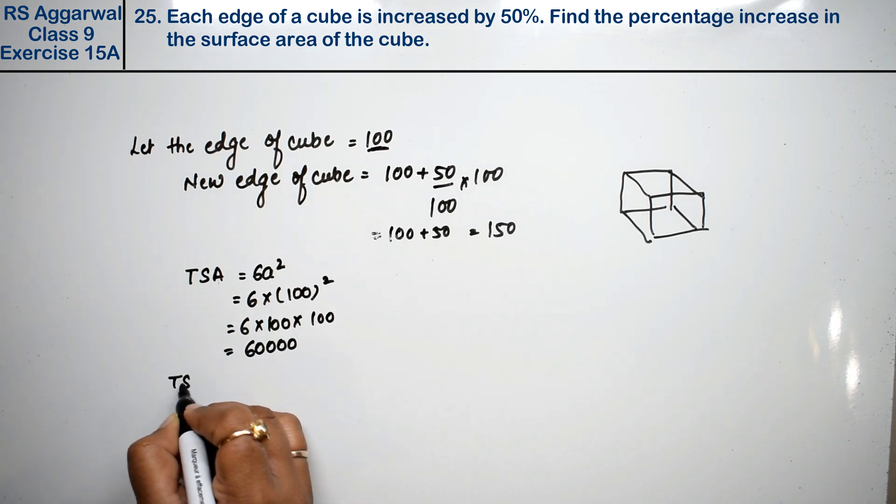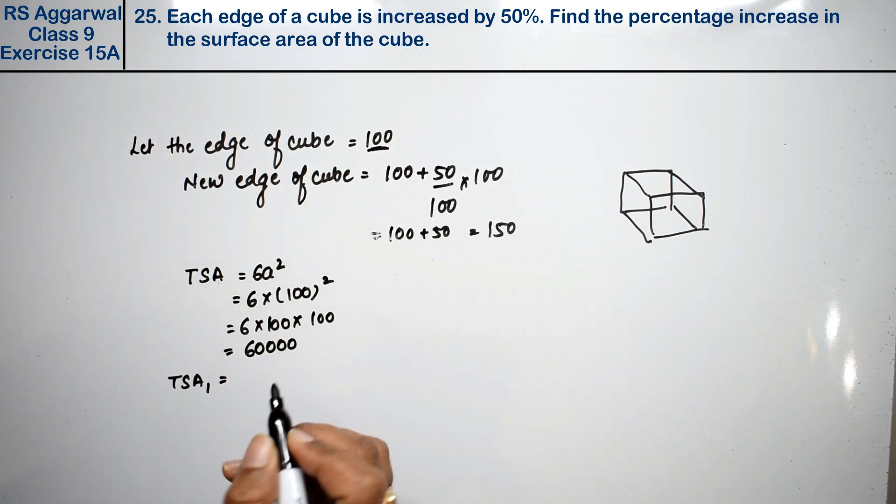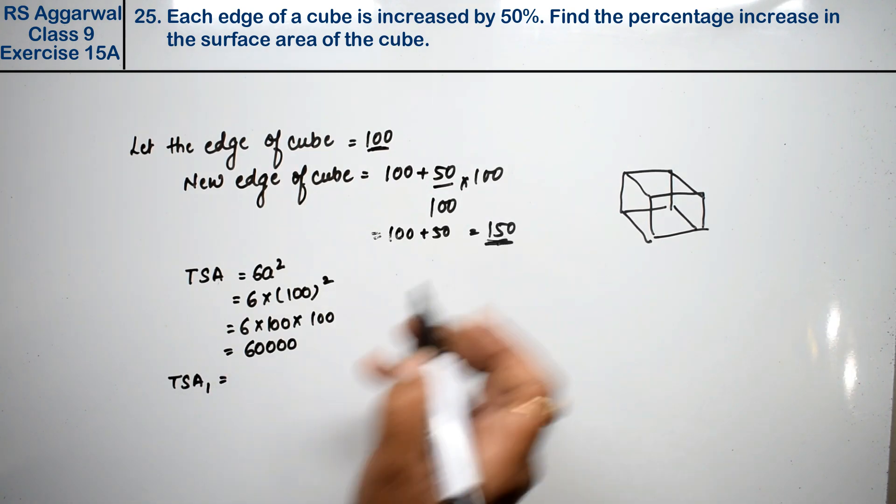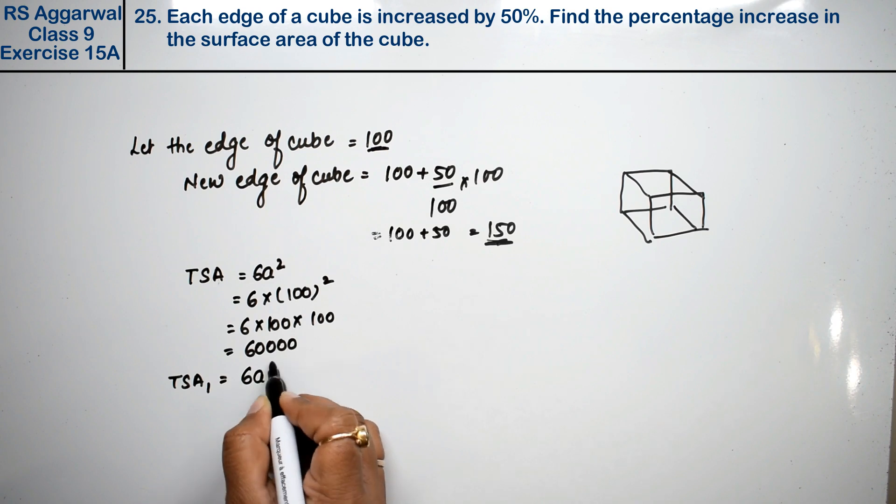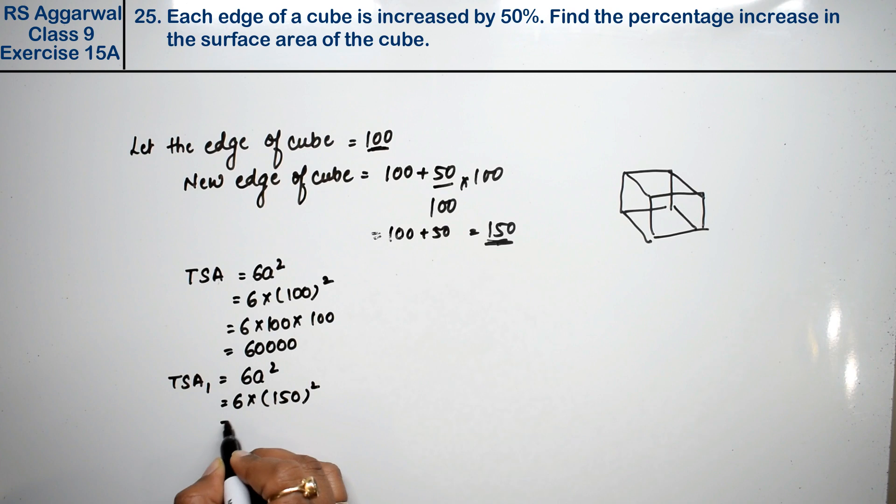Now we will take the total surface area of the new cube. What is the new edge of the cube? That is 6a², 6 into 150 whole square. How much is it?